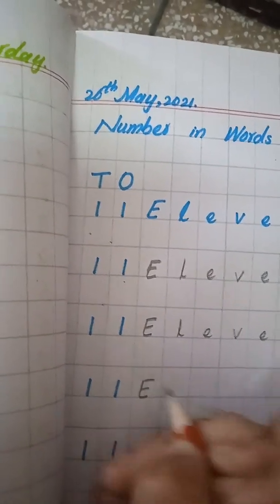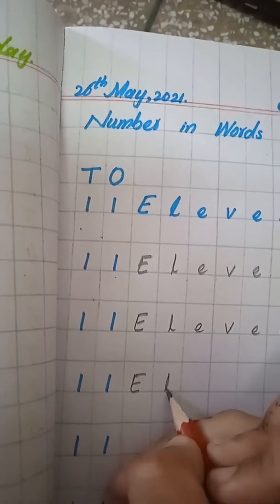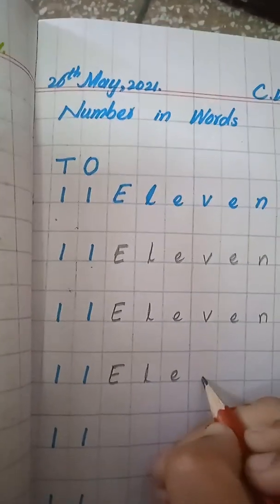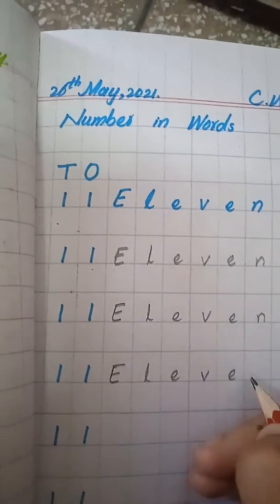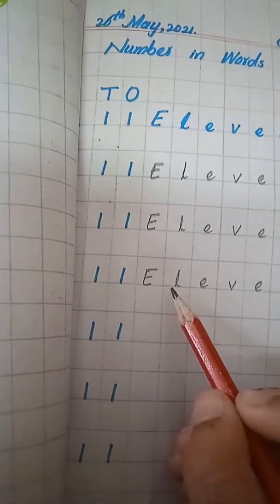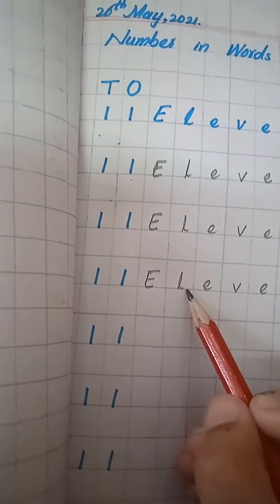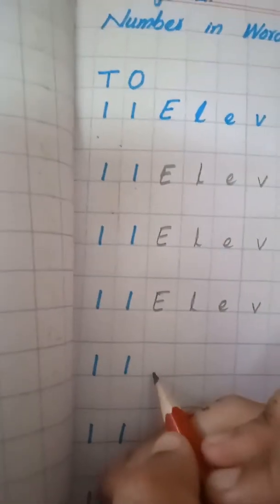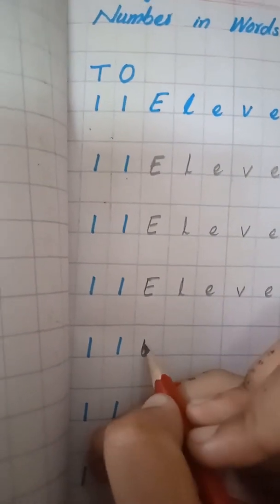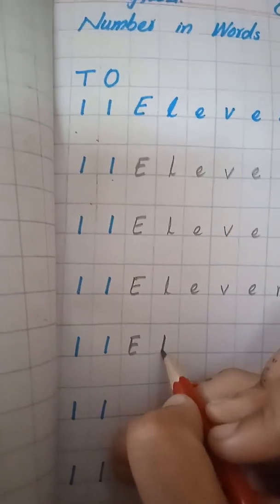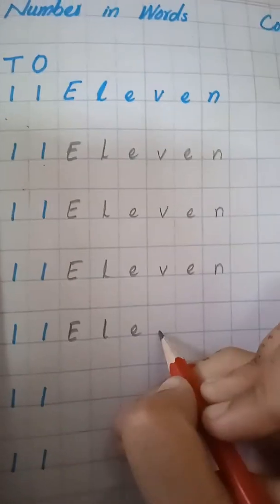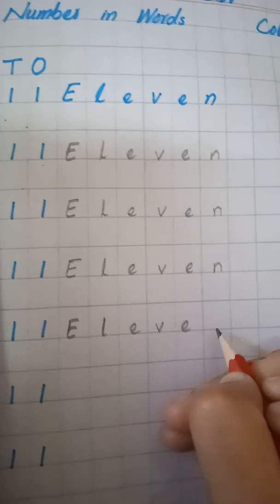11. E, L, E, V, E, N. 11. Students, remember one thing. Your alphabets have to touch the line. Okay? E, L, E, V, E, N.